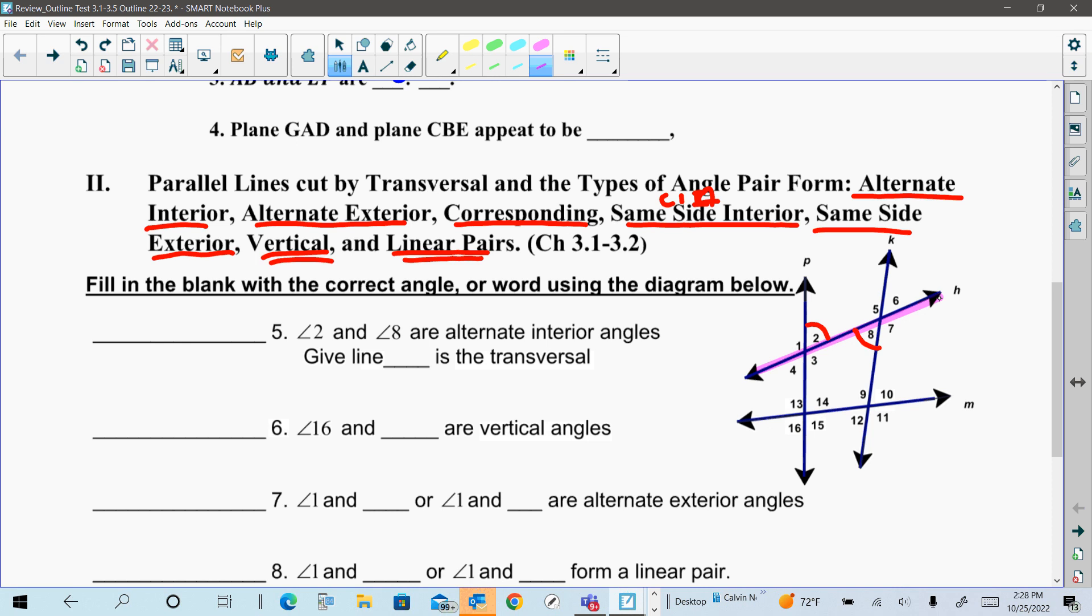Now, this first one, they just want to know the line that's transversal. That is the shared line. So here, we just put an H. If you want to put it here or here, it doesn't matter.